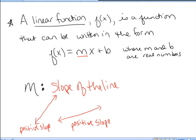The slope of a line is a number describing that steepness. On this steeper line, if I go over one I go up five, so this line has a slope of five over one, or just five.